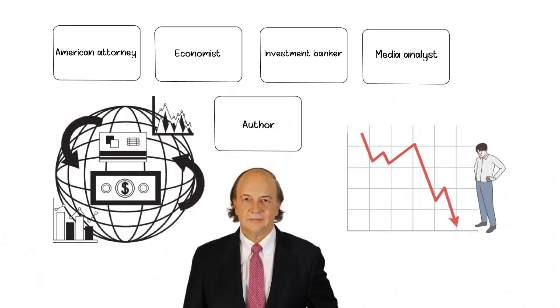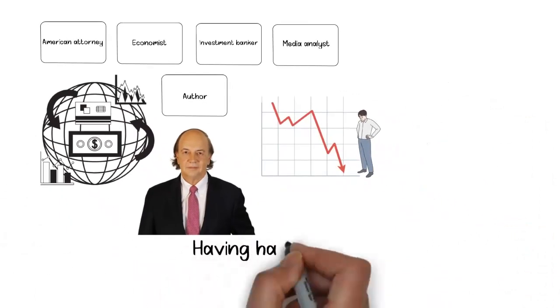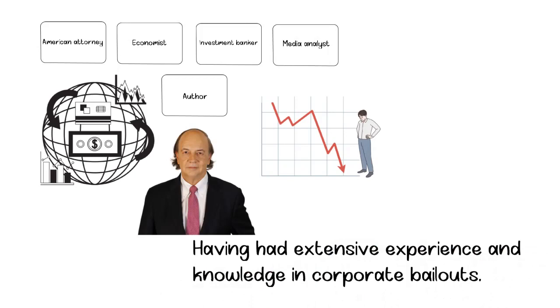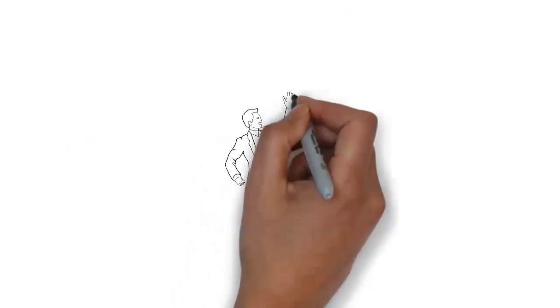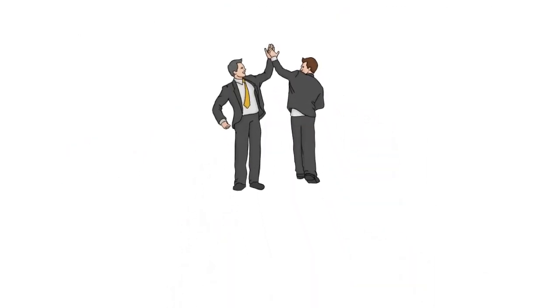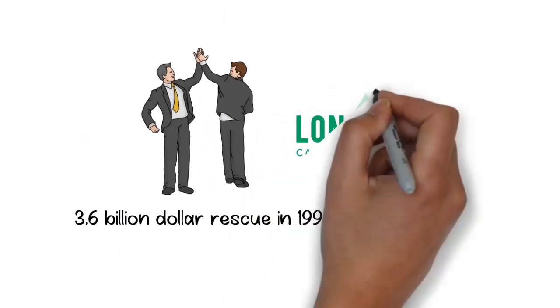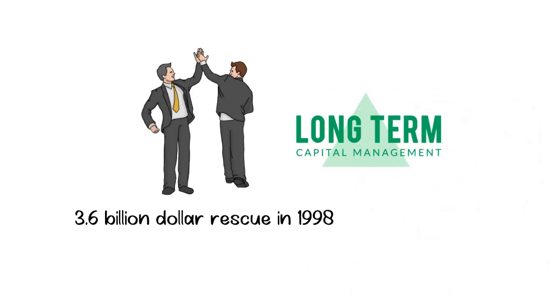Jim Rickards is a well-known figure in the financial world, having had extensive experience and knowledge in corporate bailouts. One notable accomplishment was a successful negotiation of a remarkable $3.6 billion rescue in 1998 while serving as the General Council for Long-Term Capital Management.